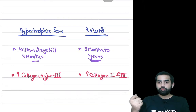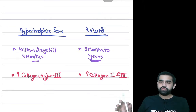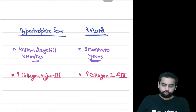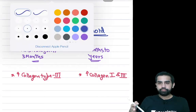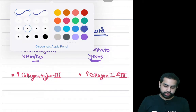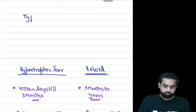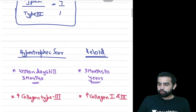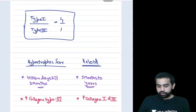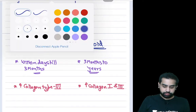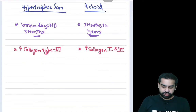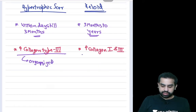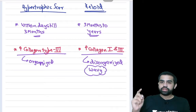In keloid there is increased deposition of both collagen type 1 and type 3. In normal skin, both collagen type 1 and type 3 are present, and the ratio of collagen type 1 to type 3 is 4:1. In the hypertrophic scar, collagen is arranged in an organized fashion. In keloid, the collagen is disorganized — your MCQs will refer to it as a wavy pattern.